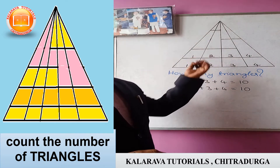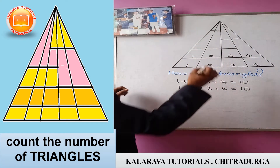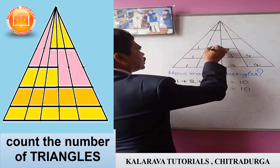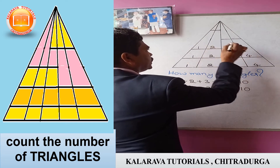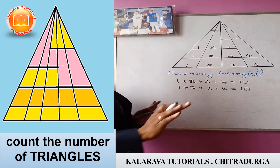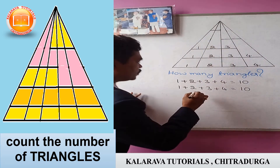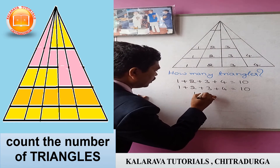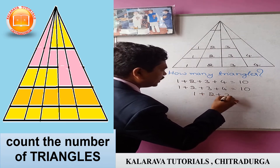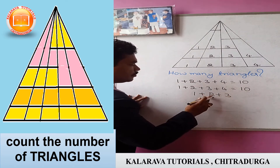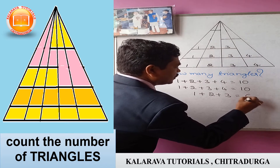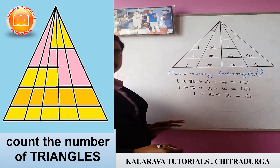Then you go to the next step. Next step: you get 1, 2, 3 — there is no part here. So you have to take only 3. 1 plus 2 plus 3. 3 plus 2 is 5, 5 plus 1 is 6. You get 6 triangles.